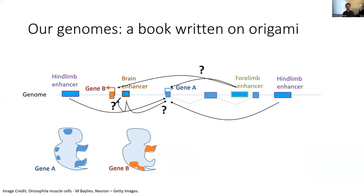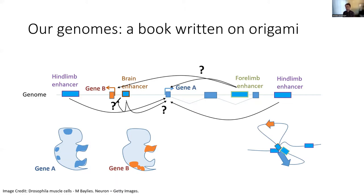For example, this enhancer sequence may instruct a hindlimb cell to use a certain amount of gene A, and this sequence directs a different amount to be used in a brain cell. In order to connect these regulatory sequences with the genes they control, the genome must fold. And in order to read the genomic instructions of life, we must therefore understand not only the linear sequence of the bases, but also its 3D organization in the cell.